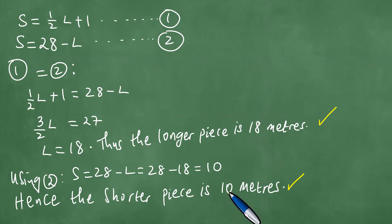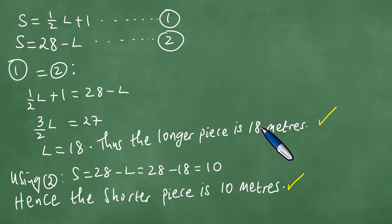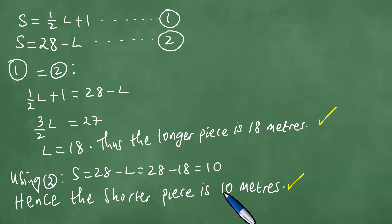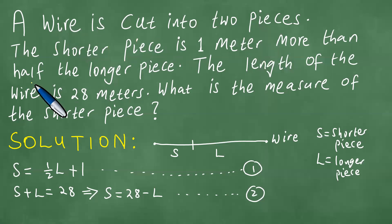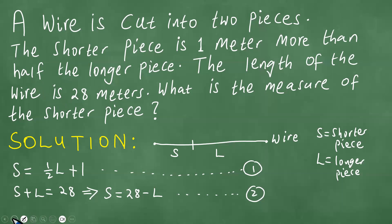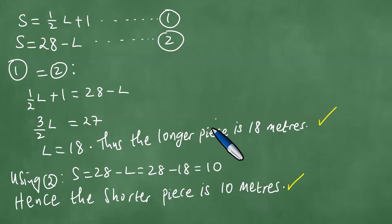We can verify that the shorter piece is 10 and the longer piece is 18. If you take half the longer piece, half of 18 is 9, and the shorter piece is 10 — one more than 9. This confirms the statement that the shorter piece is one meter more than half the longer piece. We have answered and solved this question in detail. Thanks everybody for your time and goodbye.